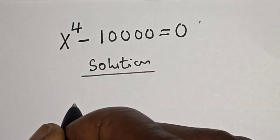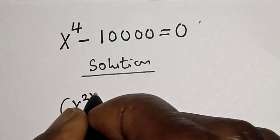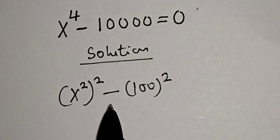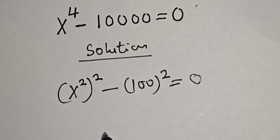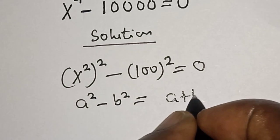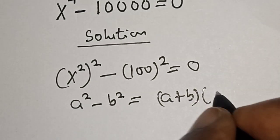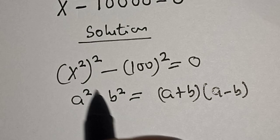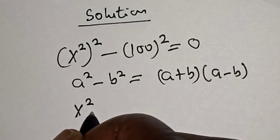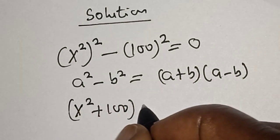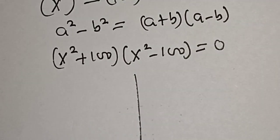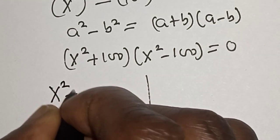s raised to power 4 can be written as (s²)², and minus 10,000 can also be written as 100². If we check this, it is a difference of two squares: a² minus b² is equal to (a + b)(a − b). Now substituting, our a is s² and our b is 100, giving us (s² + 100)(s² − 100) is equal to 0.